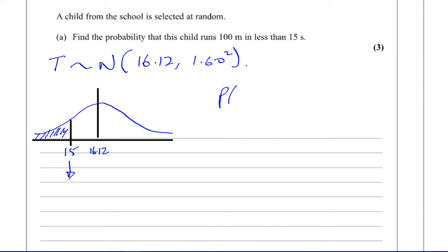So the probability that the time is less than 15 is the same as the probability that z is less than the standardized value of 15, which is found by z equals x minus the mean over the standard deviation. So it's going to be 15 minus 16.12 over the standard deviation which is 1.6.